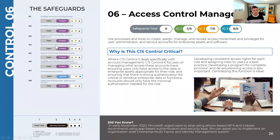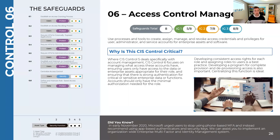6.4 is remote network access — enforcing multi-factor authentication on VPN connections or external connections into the network. Sophos has just released an update that's going to simplify this whole process. We're going to be rolling that out for all of our clients over the coming quarter, so you'll start seeing one more place where you have an added level of security when you log in.